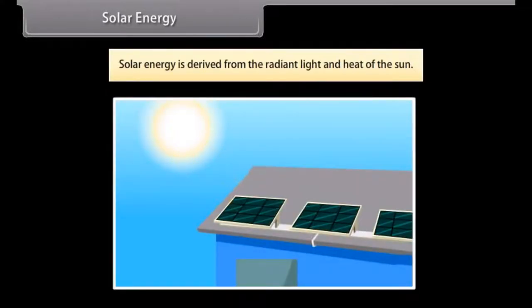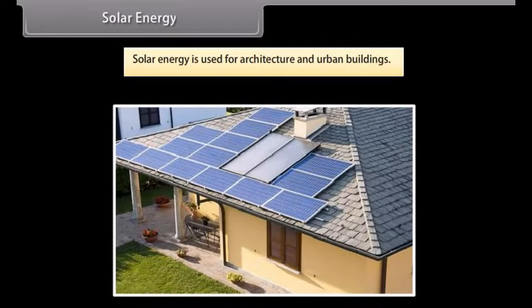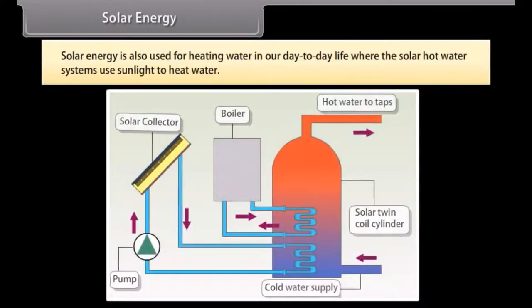Solar energy. Solar energy is derived from the radiant light and heat of the sun. It has been used by humans since ancient times for a range of technologies. Solar energy is used for architecture and urban buildings. Solar energy is also used for heating water in our day-to-day life, where solar hot water systems use sunlight to heat water. In low geographical latitudes, domestic hot water usage is provided with temperatures up to 60 degrees Celsius by solar heating systems. The most common types of solar water heaters are evacuated tube collectors and glazed flat plate collectors, generally used for domestic hot water, and unglazed plastic collectors used mainly to heat swimming pools.